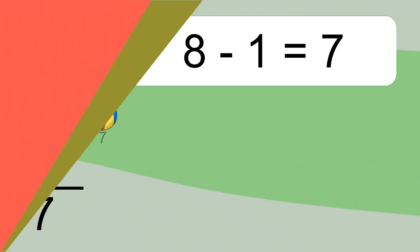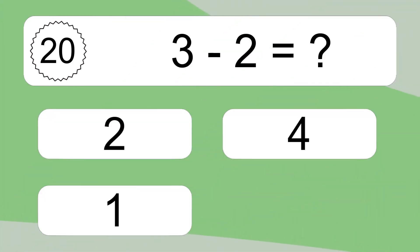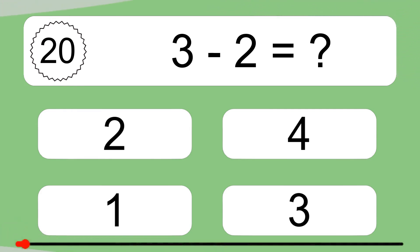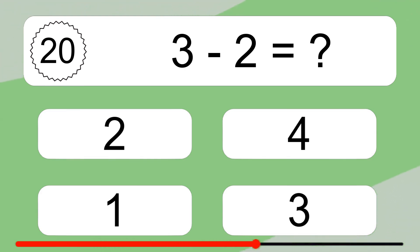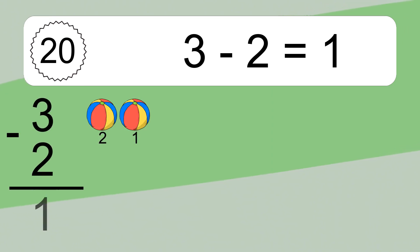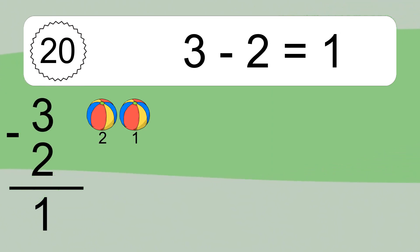3 minus 2 equals what? 3 minus 2 equals 1. Let's count it: 2, 1.